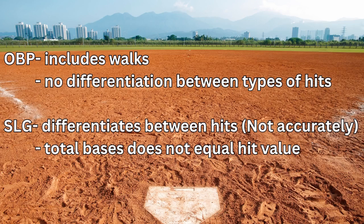Slugging percentage is still a useful statistic because it incorporates that type of value in terms of total bases. However, the total bases does not equal the hit value. For example, four singles does not necessarily equate to one home run.